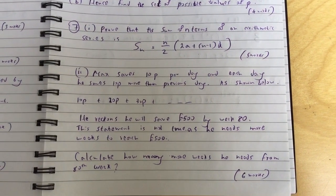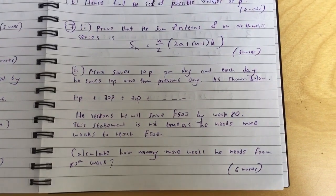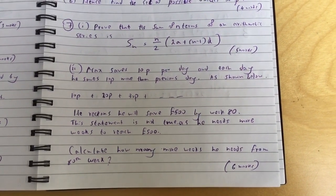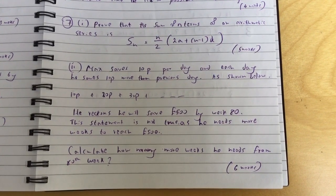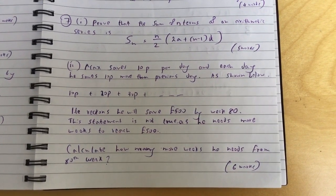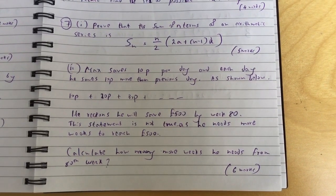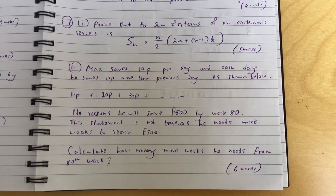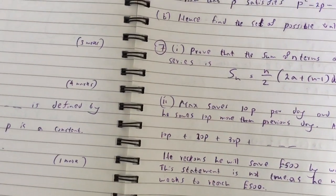(ii) Max saves 10p per day and each day he saves 10p more than the previous day, as shown below: 10p plus 20p plus 30p, et cetera. He reckons he will save 500 pounds by week 80. This statement is not true, as he needs more weeks to reach 500 pounds. Calculate how many more weeks he needs from the 80th week.